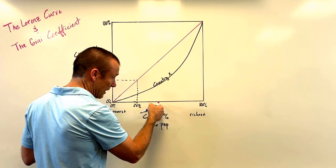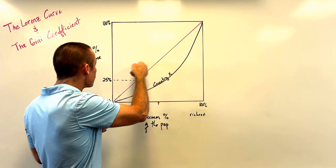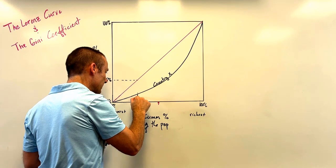We can do the same at 50 percent. Drawing up to the pink reference line and over gives us 50 percent, meaning the poorest 50 percent of the country are earning 50 percent of the income. Again, the pink line represents perfect equality.